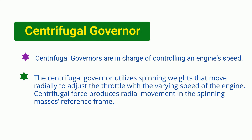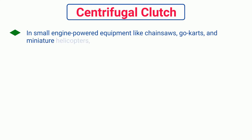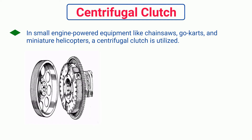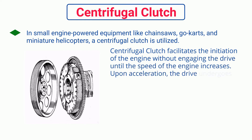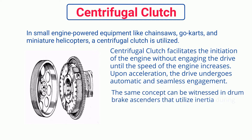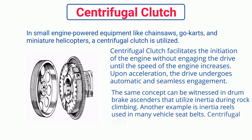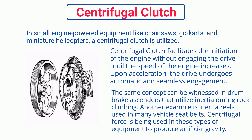In small engine-powered equipment like chainsaws, go-karts, and miniature helicopters, a centrifugal clutch is utilized. The centrifugal clutch facilitates the initiation of the engine without engaging the drive until the engine speed increases; upon acceleration, the drive undergoes automatic and seamless engagement. The same concept can be witnessed in drum brake ascenders used in rock climbing, and in inertia reels used in many vehicle seat belts, all using centrifugal force to produce artificial gravity.